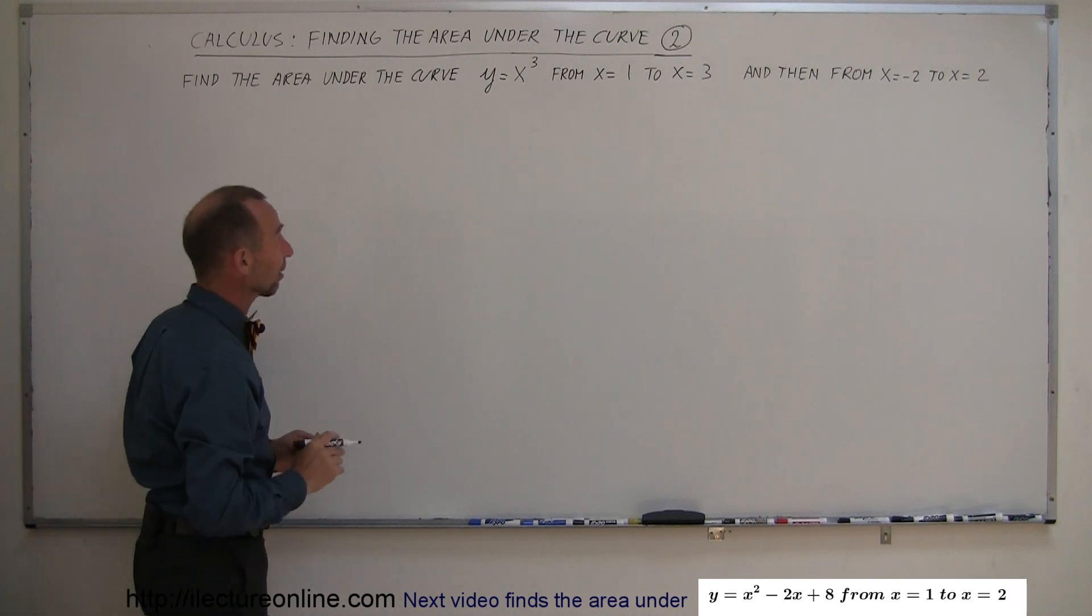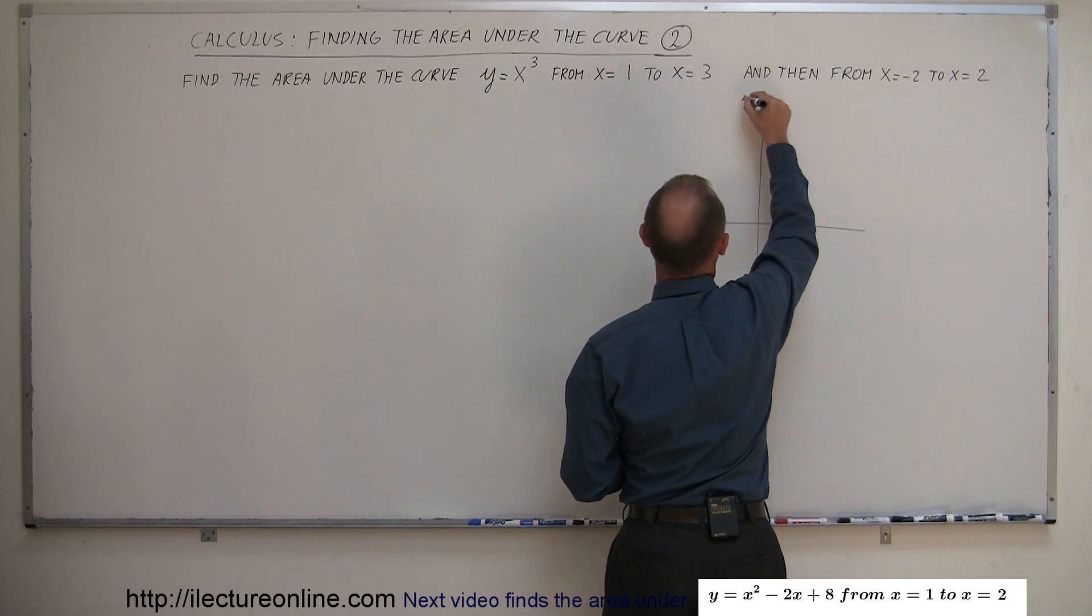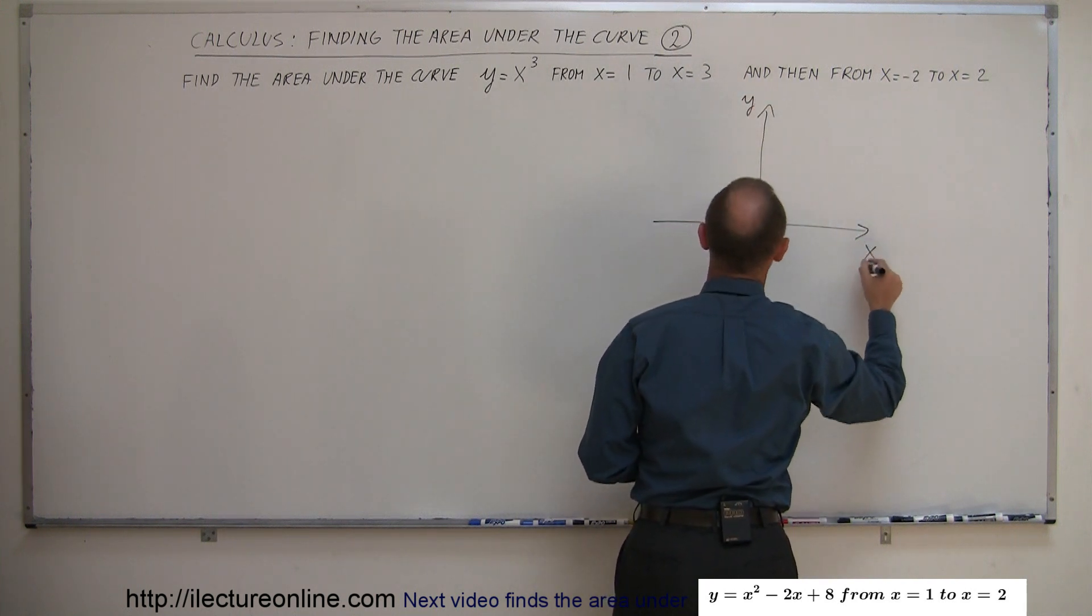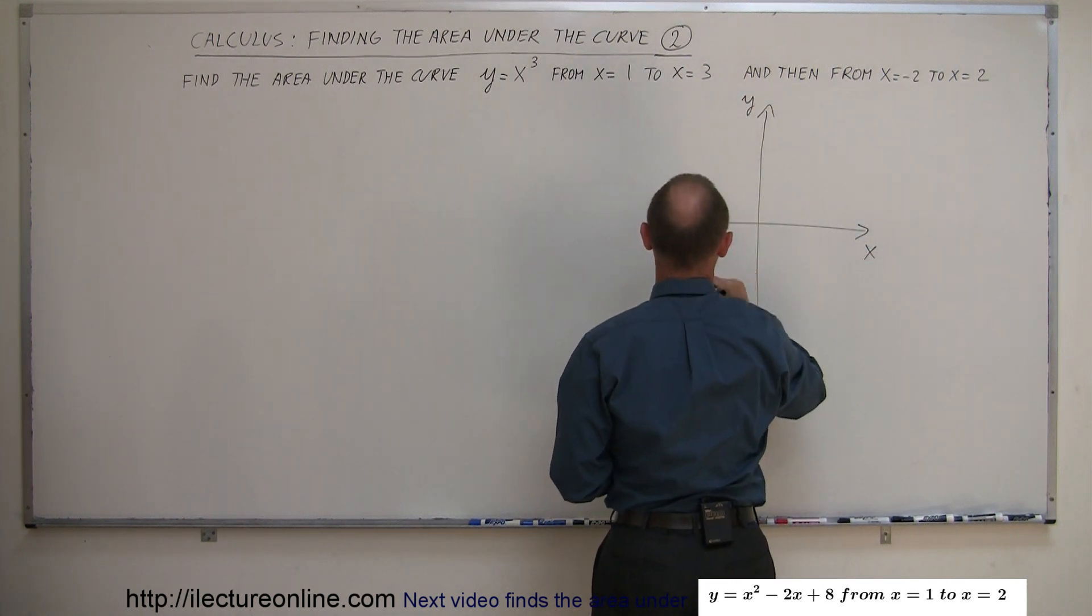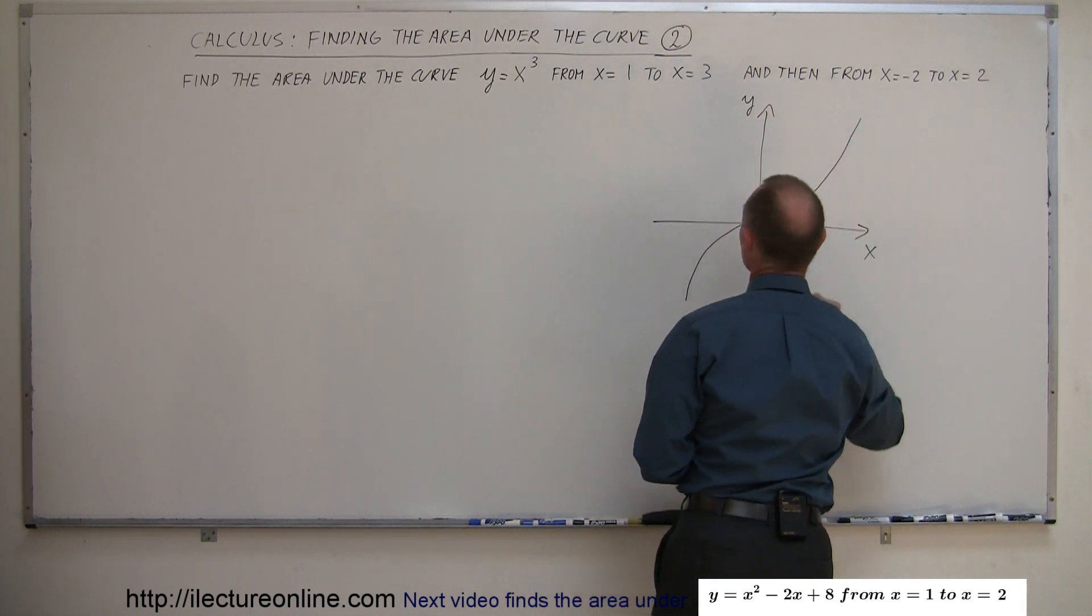First of all let's grab that function and graph it. That's a very straightforward function. We have the y-axis here, the x-axis here, so y equals x cubed looks kind of like this.